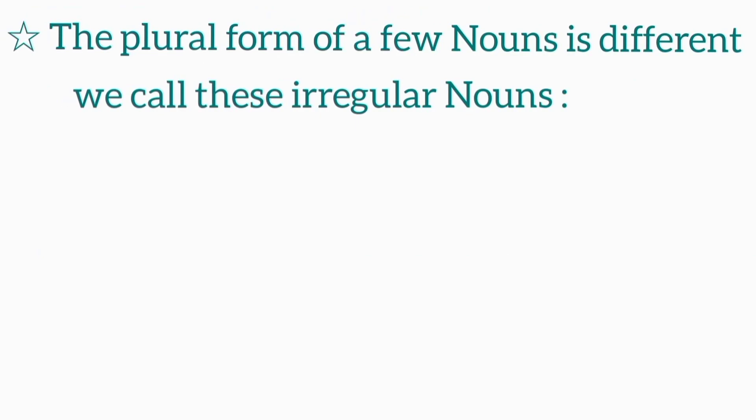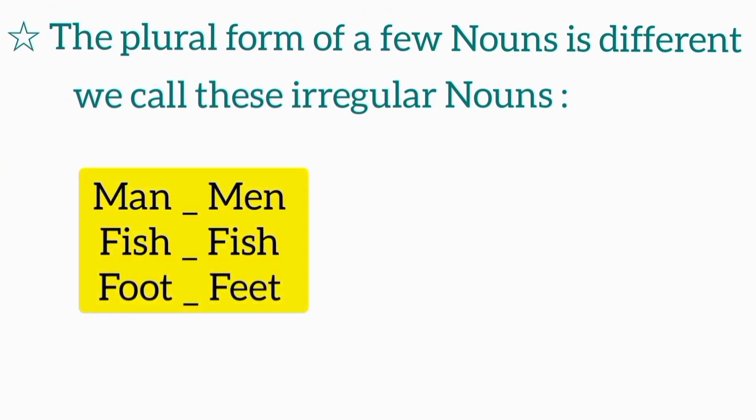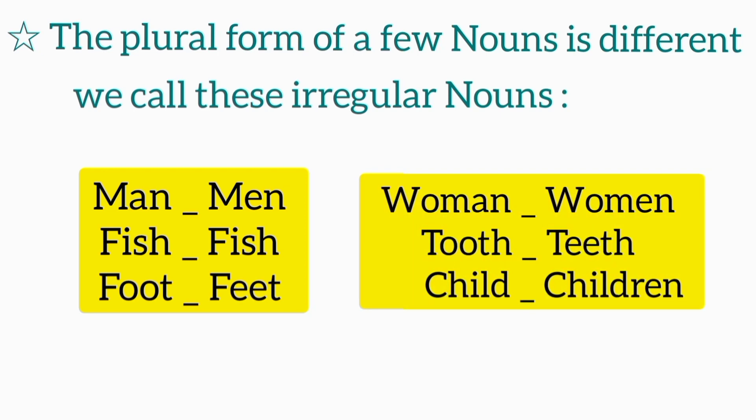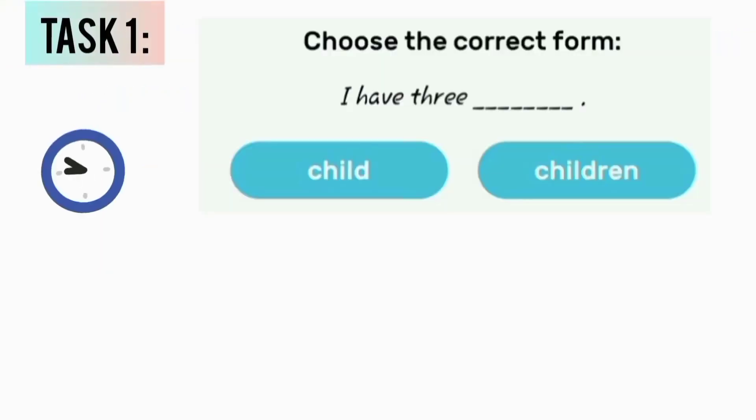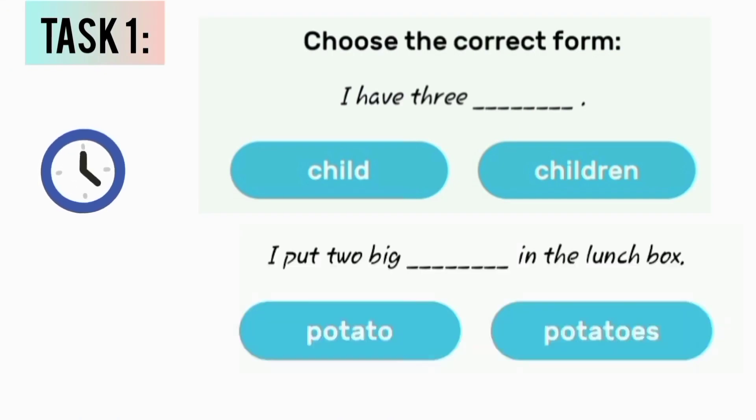Man, men; fish, fish; foot, feet; woman, women; tooth, teeth; child, children. Task one: Choose the correct form. I have three child or children? I put two big potato or potatoes in the lunch box?